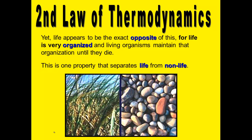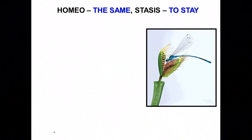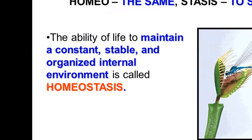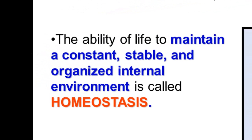Living things are very organized internally. Homeostasis means to stay the same — to stay the same inside, chemically inside your body. The classic definition is the ability of life to maintain a constant, stable, and very organized internal environment. Make sure you know that definition in your own words.